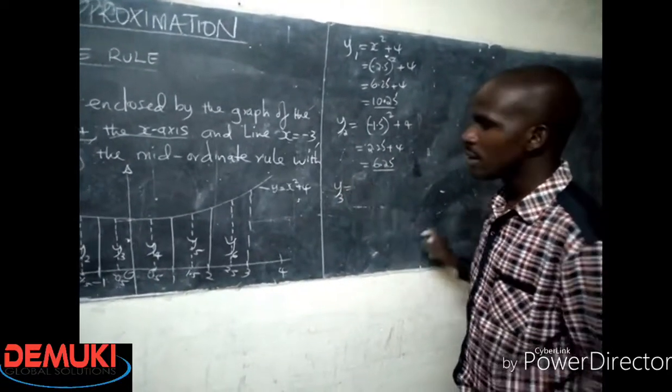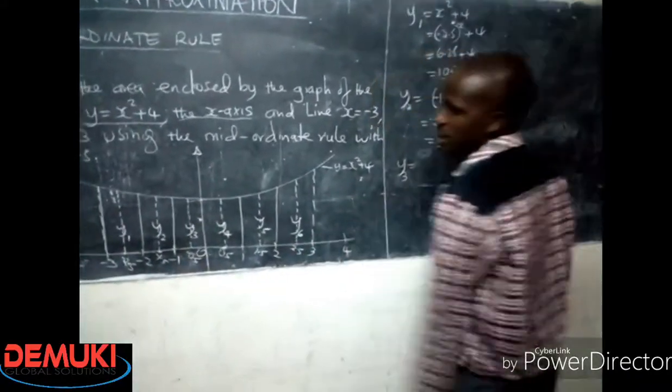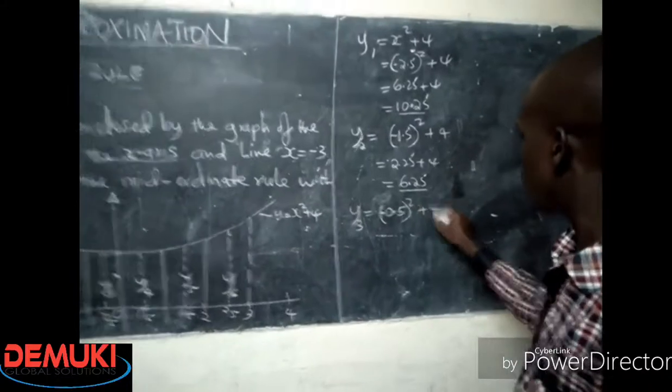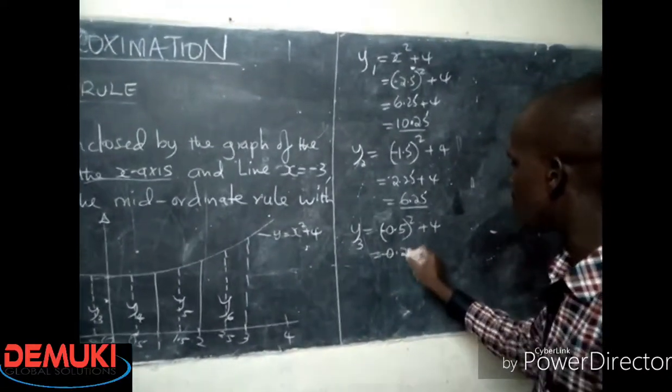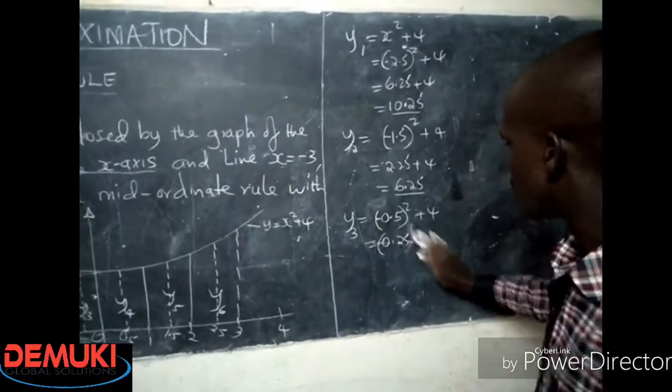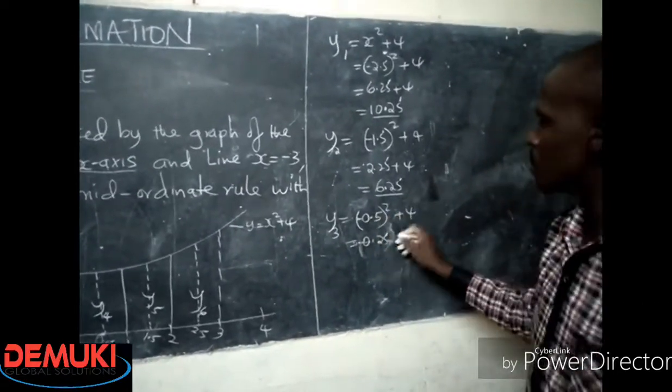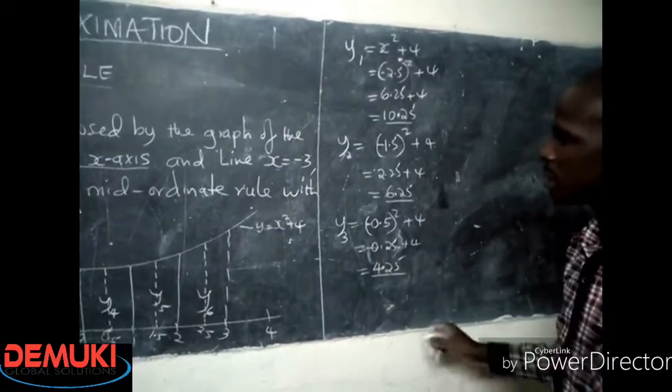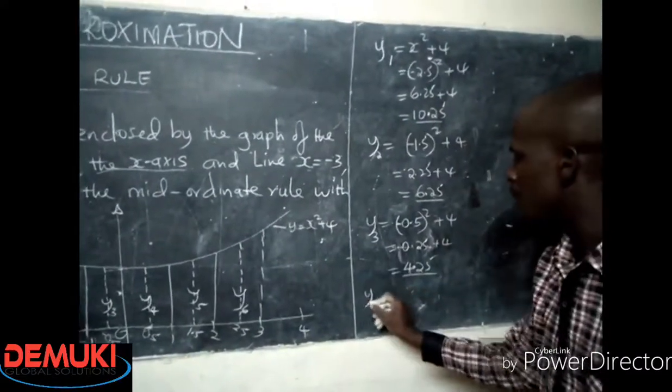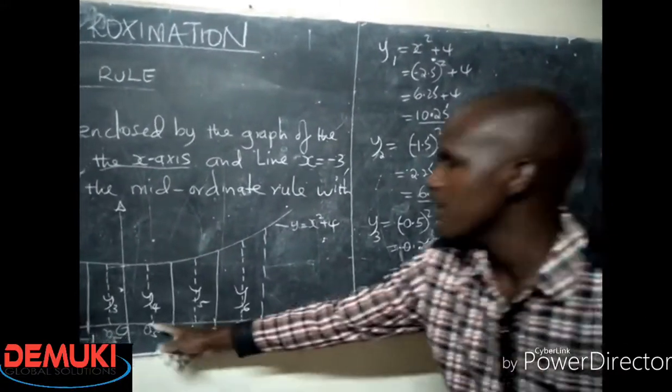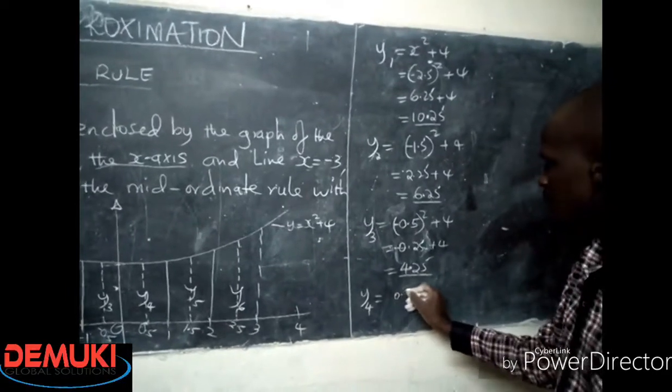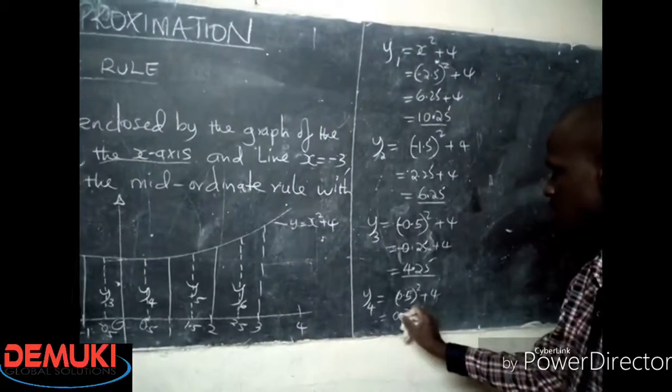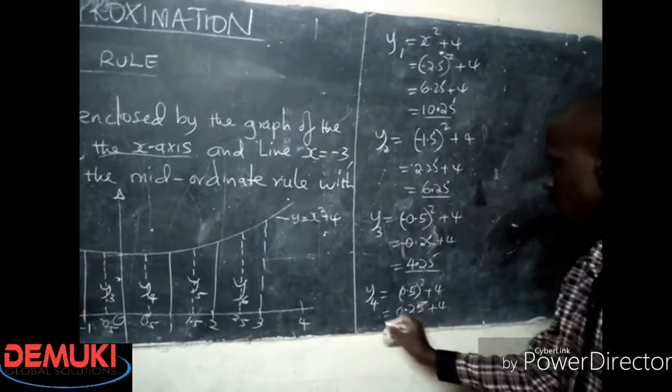So this will be 2.25, 1.5 squared is 2.25, then plus 4, so my y2 will be 6.25. Now the third one, the x value y3 is negative 0.5, so negative 0.5 squared plus 4. So this becomes 0.25, 0.5 squared is 0.25 plus 4, so this one comes to 4.25. So we move on to the fourth ordinate. The corresponding value of x is 0.5, so we shall have positive 0.5 squared plus 4.